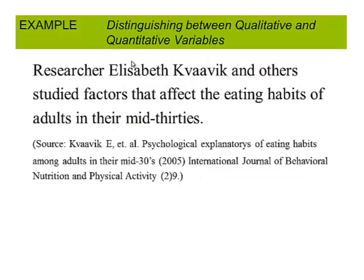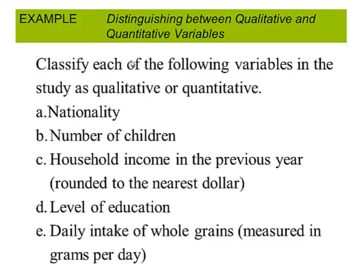Let's look at some examples. This researcher studied some factors that affected the eating habits of adults in their mid-30s. We're going to classify each of these factors as qualitative or quantitative. Nationality, not a number. These are categories, so the answer would be qualitative.